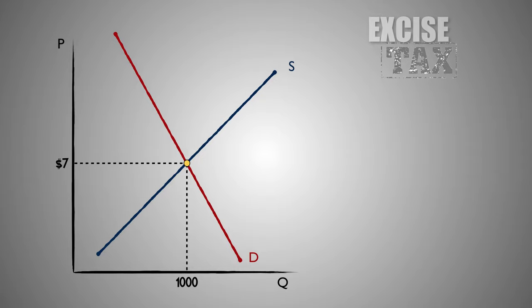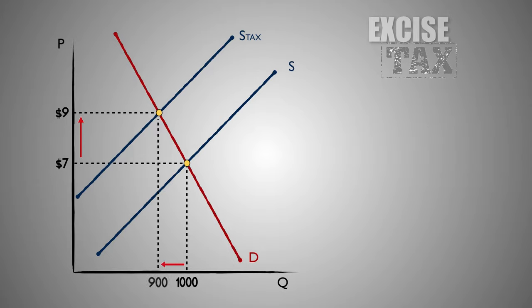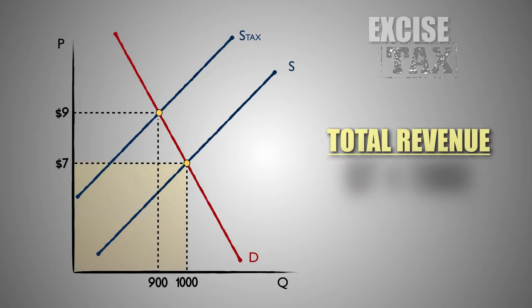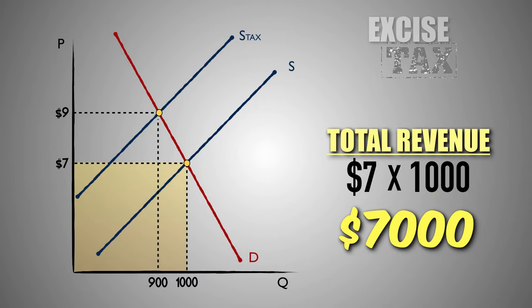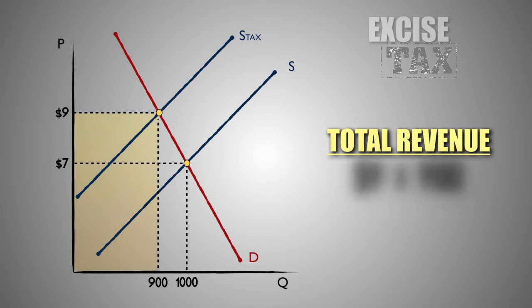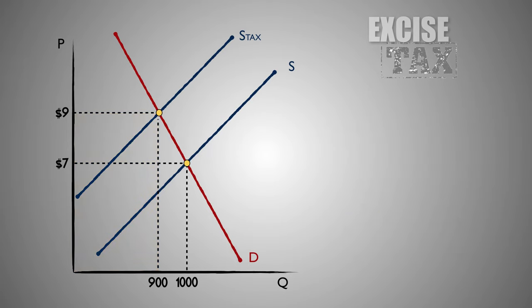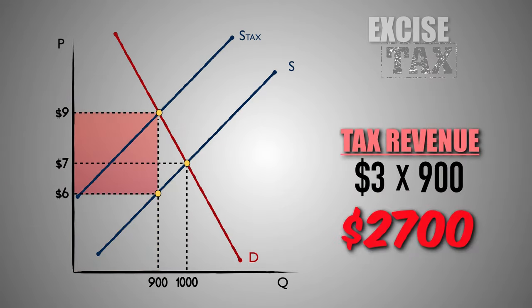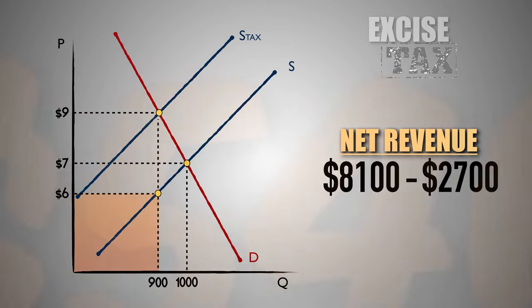To show the impact of this excise tax on the market for Good F, we'll shift the supply curve to the left in the exact amount of the per unit tax. We'll then establish a new market equilibrium at the intersection of the demand curve and the new supply curve after the tax. After the $3 per unit tax, the price of Good F has increased to $9 and the output in the market has decreased to 900 units. From here, we can determine that firms earned a total revenue of $7,000 before the tax. However, after the tax was imposed, the total revenue for firms that produce Good F increased to $8,100. The tax revenue generated by this per unit tax is $2,700, and the net revenue kept by firms in the industry is $5,400.